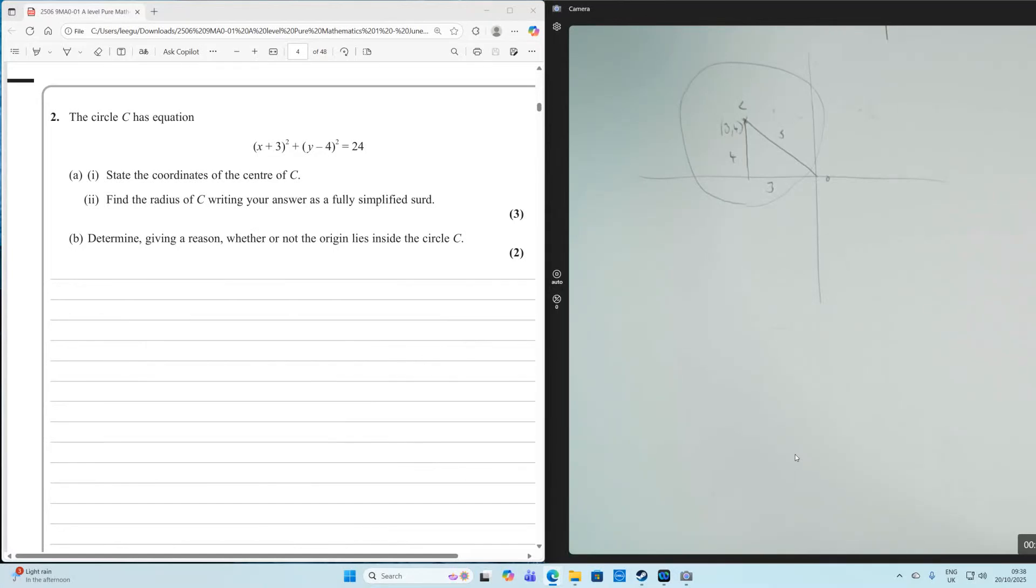Hello everyone, this is question 2 of paper 1 of 2025 Pure. The circle C has the equation (x + 3)² + (y - 4)² = 24.